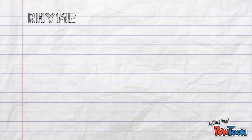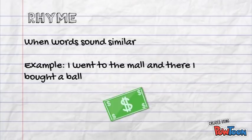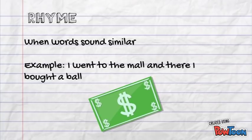And for your last one today, it's an easy one. You know this. It's rhyme. It's when words sound similar. So for example, I went to the mall and there I bought a ball. And then I had a fall. And then I had to call my aunt Saul.